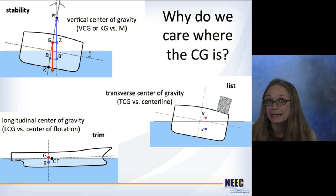So why do we care where the center of gravity is? Well, three reasons for each of the three dimensions. For stability, we care where the vertical center of gravity is, because hopefully G is underneath M, because otherwise your ship is going to be unstable. For the transverse center of gravity, it depends on where it is in relationship to the centerline. If it's on the centerline, then your ship will be on even keel, and that would be good. If it's off to the side, then your ship will have a list to it. And finally, for the longitudinal center of gravity, we compare that to where the center of flotation is. If they do not align, then your ship will have some sort of trim to it.